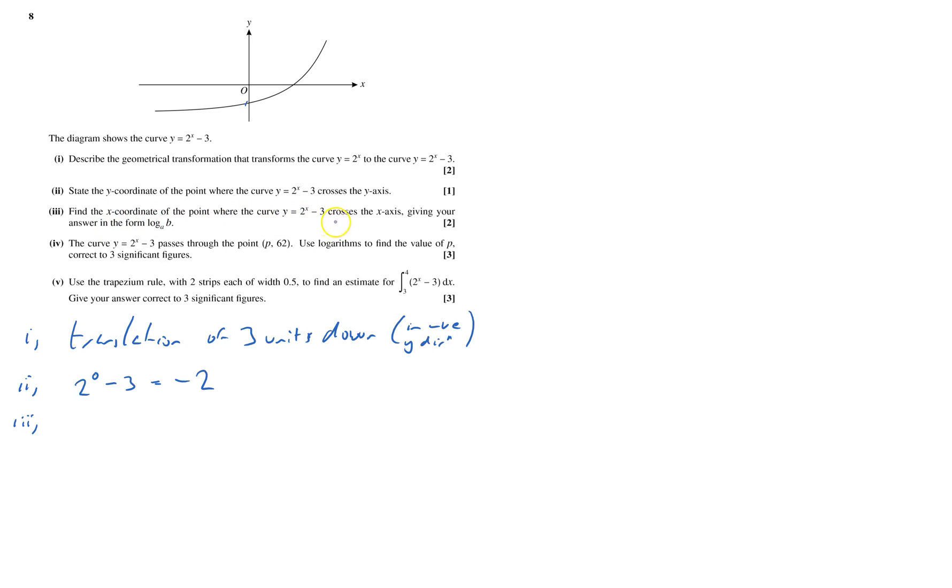Find the x-coordinate at the point where it crosses the x-axis giving you in the form log of base a of b. And so it wants to work across this bit here, it wants that value there. Well, it means y is 0. So I've got y equals 2 to the power of x take away 3. I want to have when basically when y equals 0.